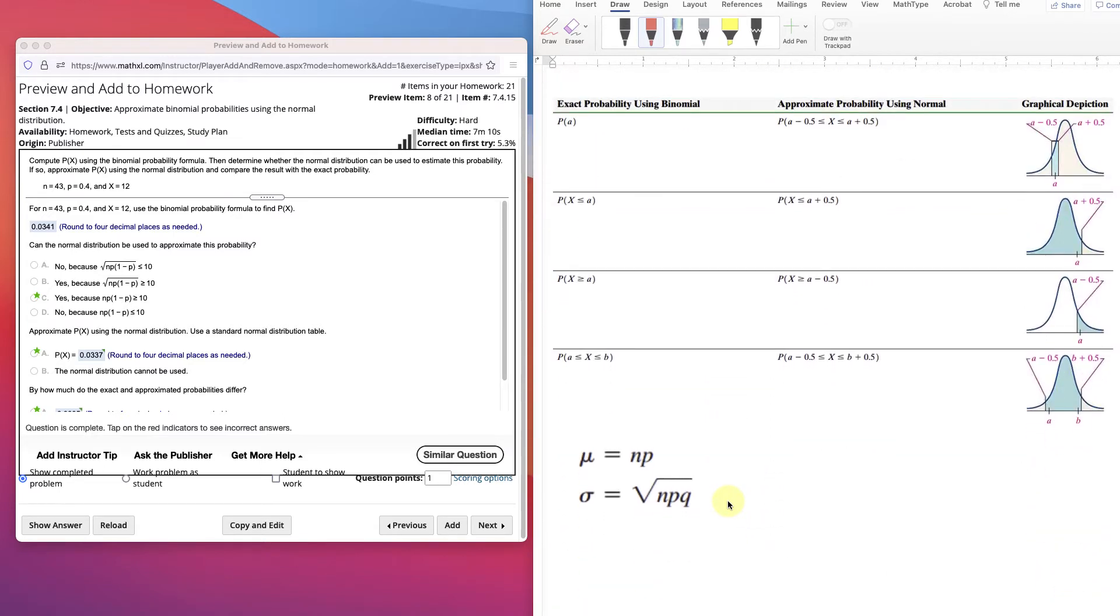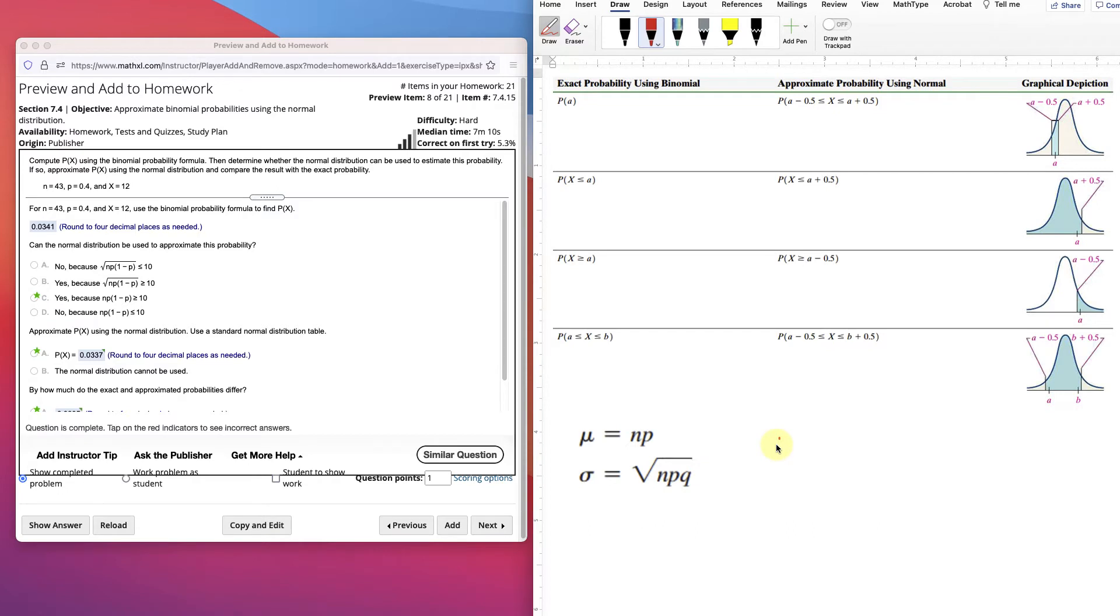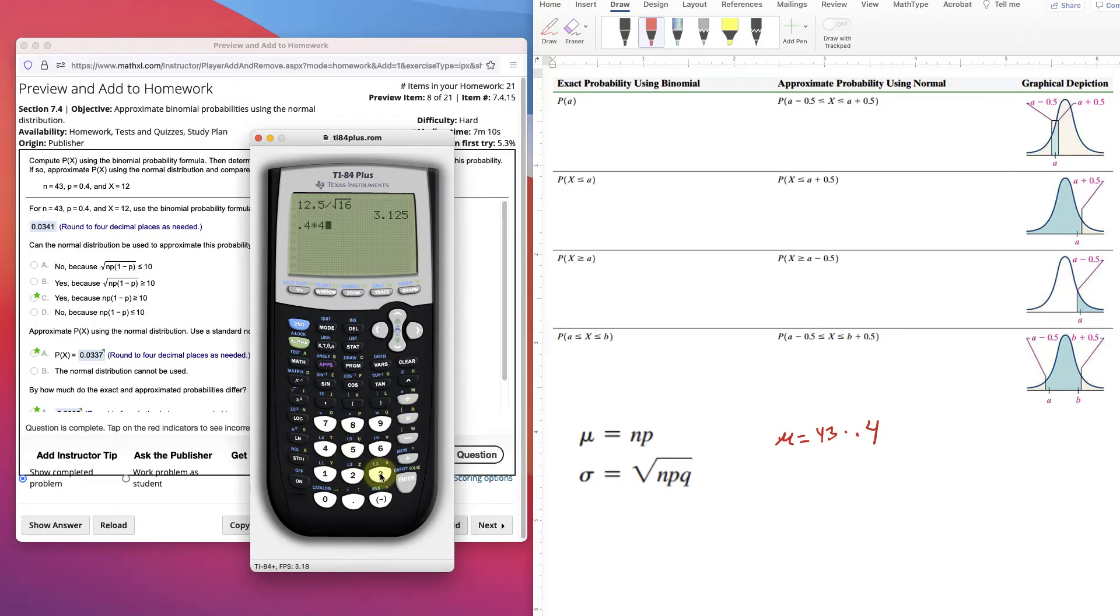The formula to do that is μ equals np, and the standard deviation is the square root of npq. So we find μ equals n, 43, times the p, which is 0.4. And our standard deviation is the square root of 43 times 0.4 times 0.6. Remember, the q is just 1 minus p, so they both add up to 1, 0.4 and 0.6.